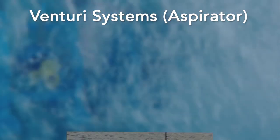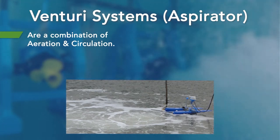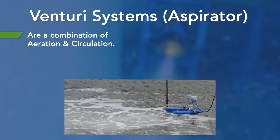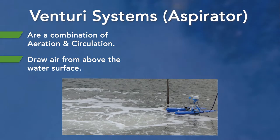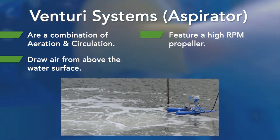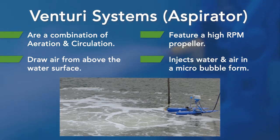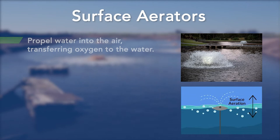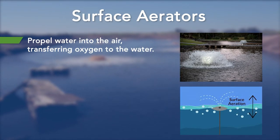Venturi systems utilize a combination of aeration and circulation, making them some of the most effective systems that introduce crucial oxygen at higher transfer rates. Venturi systems draw air from above the water surface and have a high RPM propeller that creates a negative pressure in a chamber, allowing injection of water and air in micro-bubble form. Surface aerators propel water into the air via a mechanical device so that the two elements come into contact and transfer oxygen from the air to the water.